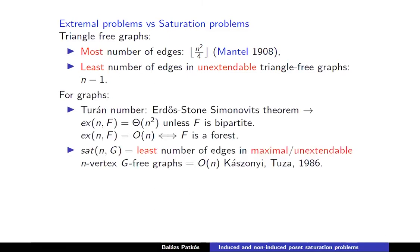This minimum is n−1 because if you have fewer edges in a graph on n vertices, then it's not going to be connected. So if you add an edge joining two different components, then definitely no cycles and in particular no triangle will be created. For graphs in general, not only triangle-free graphs, if you forbid a graph F, the extremal problem asks for the most number of edges without creating a copy of F. This is settled more or less for non-bipartite graphs by the Erdős–Stone–Simonovits theorem.